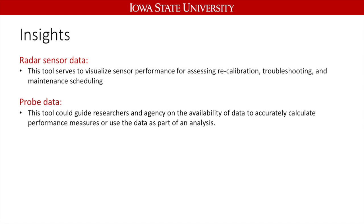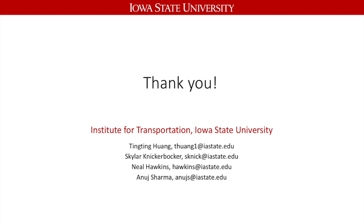So my study has two parts. First, we run an algorithm on radar sensor data to check the completeness and accuracy of those sensors, then report to the vendor every two weeks so they can schedule troubleshooting. For the INRIX data, which we mainly use for research, if you want to do anything related to real-time data, you need to check the availability dashboard first to target the right road segments. Otherwise, you won't have good data to work with. That's my study. Thank you.